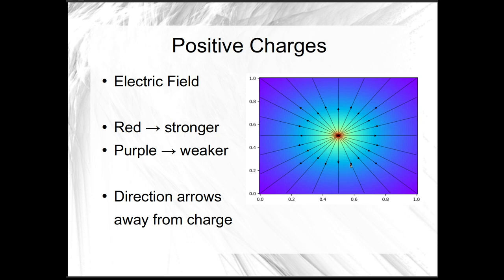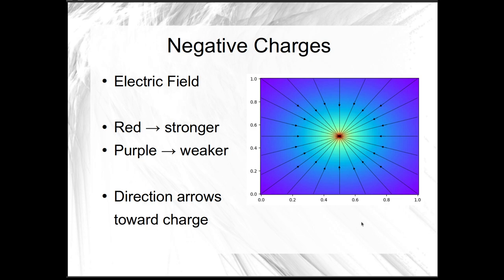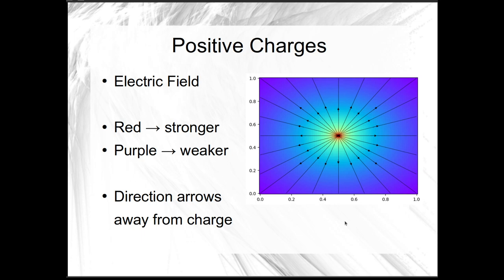In comparison, for a negative charge, we see that it's still the red strongest color right near the negative charge and purple further away where it's weaker. But now the direction arrows actually point in towards the negative point charge. Wherever you have a negative charge, the arrows are going to point towards it, versus when we had a positive, the arrows pointed away from the charge.